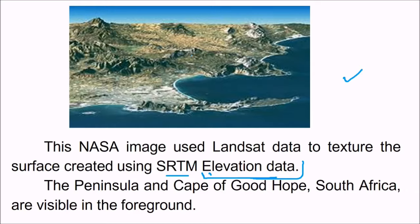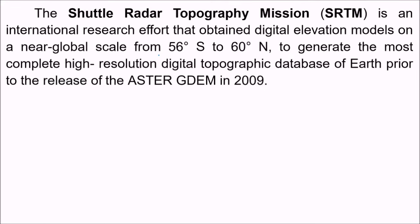You can also see the Peninsula and Cape of Good Hope, South Africa, which are visible. SRTM is an international research effort that obtained a Digital Elevation Model on a near-global scale, from 56 degrees south to 60 degrees north, to generate the most high-resolution digital topographic database of Earth prior to the ASTER GDEM in 2009.